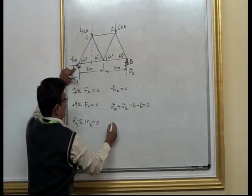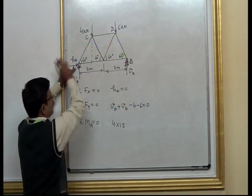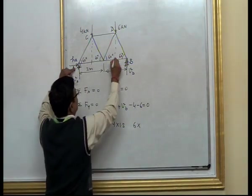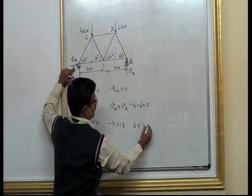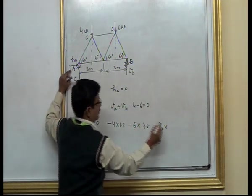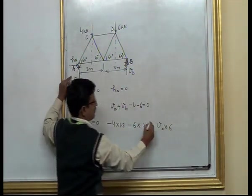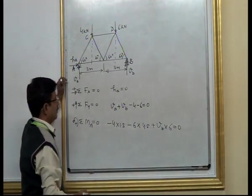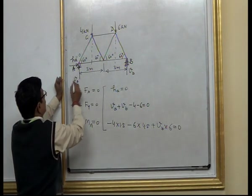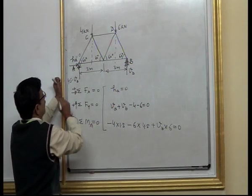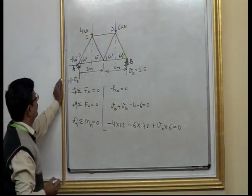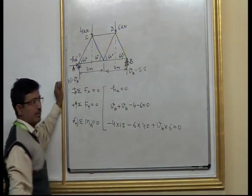From the moment equation: 4 × 1.5 (clockwise, taken as negative), 6 × 4.5 (clockwise, taken as negative), and Vb × 6 (anticlockwise, taken as positive) equals 0. These three equations give us the values: Ha = 0, Va = 4.5, and Vb = 5.5. This completes step number 1.